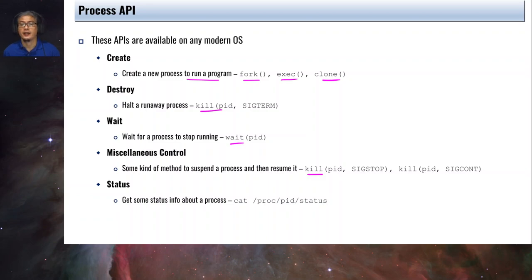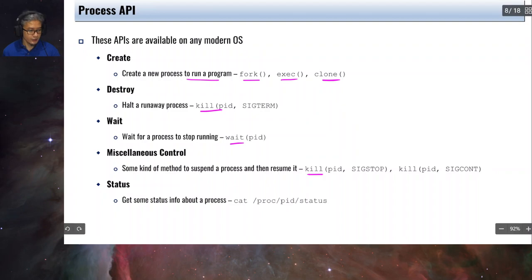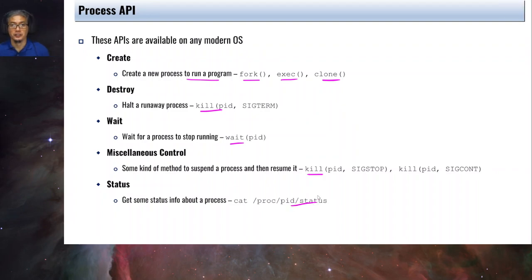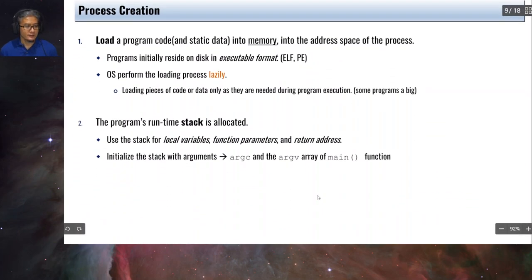We also have status functions to get information about the status of a process, which I demonstrated earlier. We'll have a detailed discussion of the actual operations of these functions in the next chapter. Now let's take a look at a more detailed view of process creation.